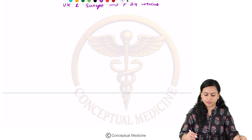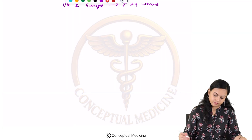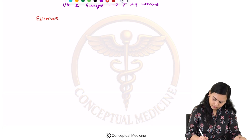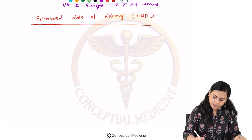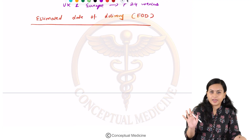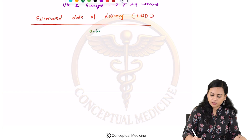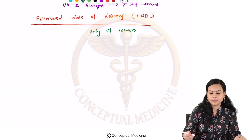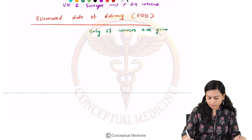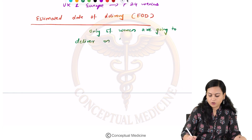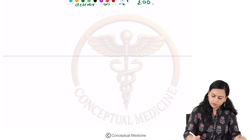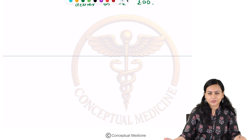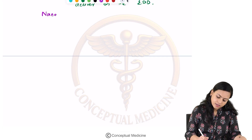Now we will see about the estimated date of delivery, that is EDD, and how we are going to calculate it. Remember, even when calculating EDD, only 5% of women are going to deliver on the estimated date of delivery. We have a rule to calculate EDD called Naegele's rule.